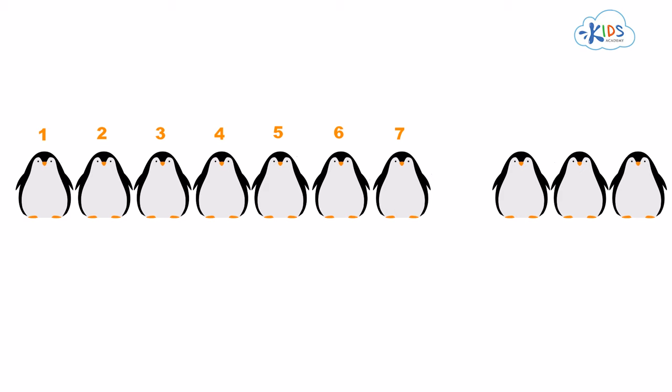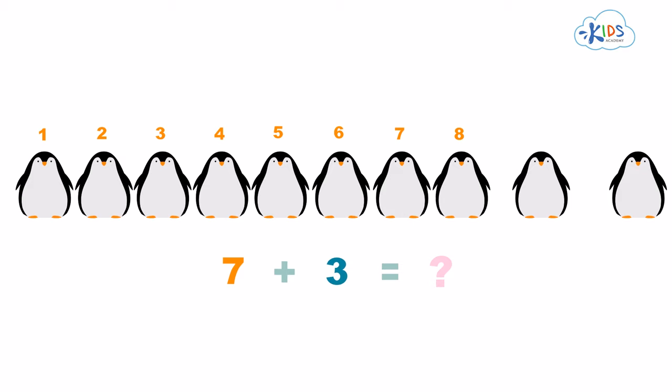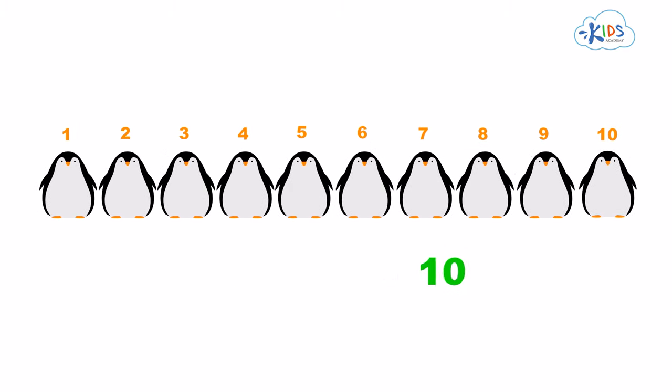Here come three more little penguins. So, we've got how many little penguins now? One, two, three, four, five, six, seven, plus three more, makes eight, nine, ten. We've got ten little penguins.